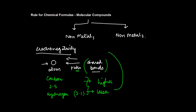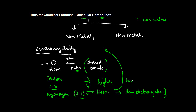Depending on whether the electronegativity is lesser or higher, we decide the order of names in a molecular compound. Whenever a molecular compound is formed from two non-metals — for example, hydrogen has an electronegativity of 1 and carbon has 2.5 — hydrogen has less electronegativity, while carbon has high electronegativity. The one with the lesser electronegativity, which is hydrogen, is going to be written first.